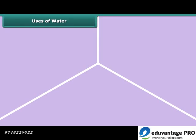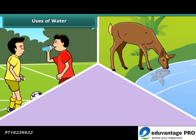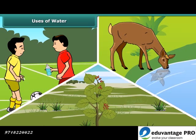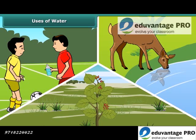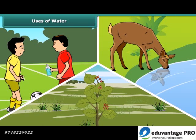Water is an essential part of human, animal and plant life. Living things cannot live without water. It is said that life originated in water and gradually shifted to land, but the connection and importance of water still remains the same. Water is essential for every living organism to grow and flourish.